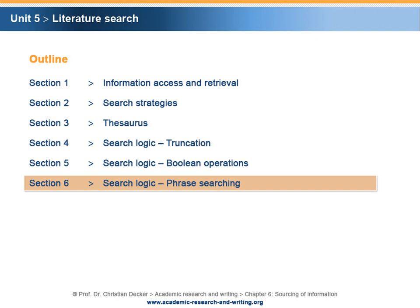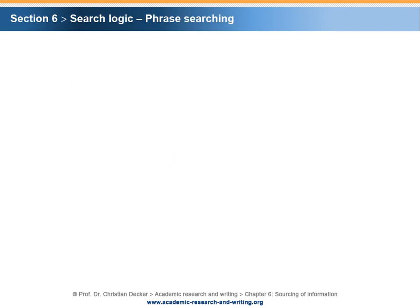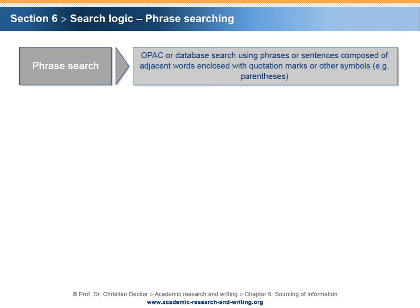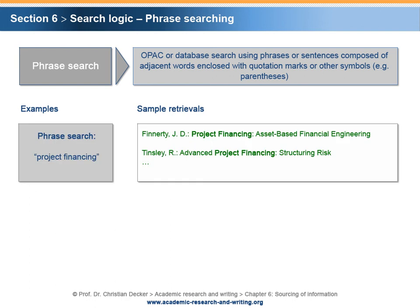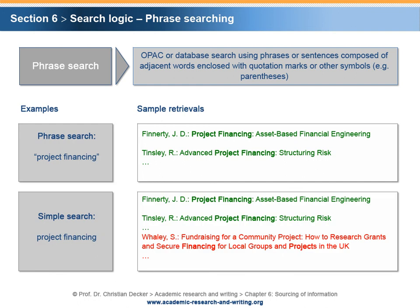Section 6 – Search logic: Phrase searching. In a phrase search, phrases or sentences composed of adjacent words enclosed with quotation marks or other symbols such as parentheses are used for OPAC or database search. For example, the phrase search '"Project Financing"' retrieves literature titles that contain the exact word combination 'Project Financing.' In contrast, the simple search 'Project Financing' retrieves literature titles that contain the words Project and Financing in a random order.